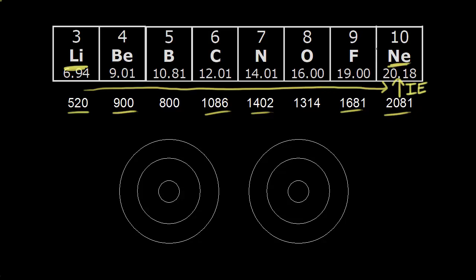That's because as we go across a period, there's an increase in the effective nuclear charge — an increase in Z effective. The formula for that is: the effective nuclear charge equals the actual number of protons (Z) minus S, which is the average number of inner electrons shielding our outer electrons.